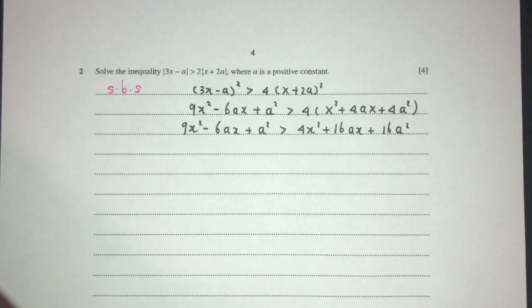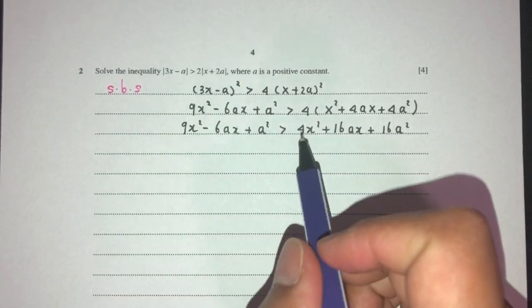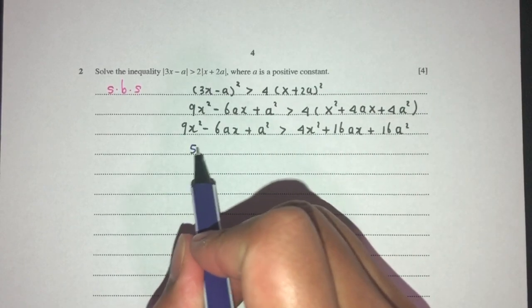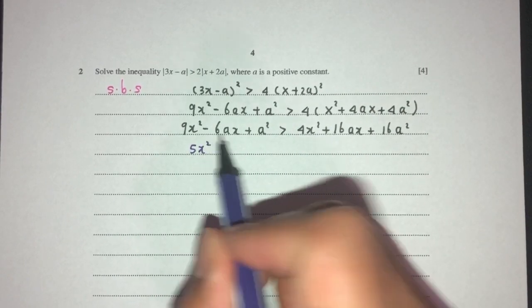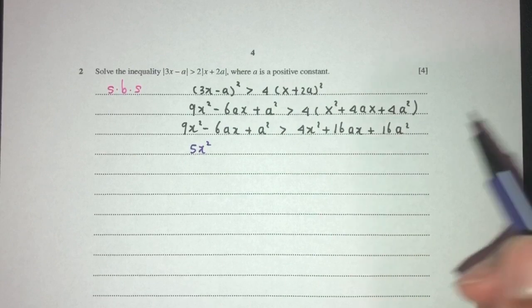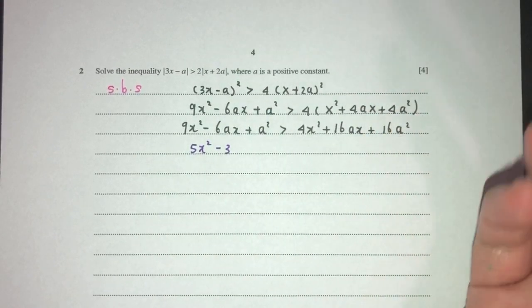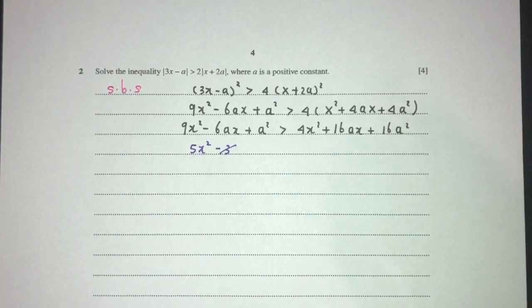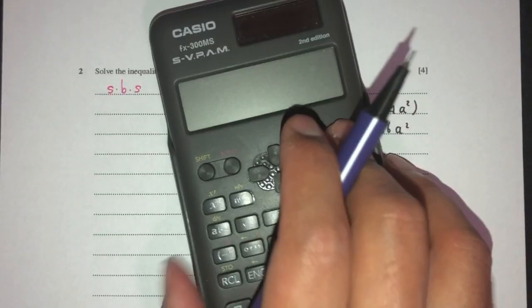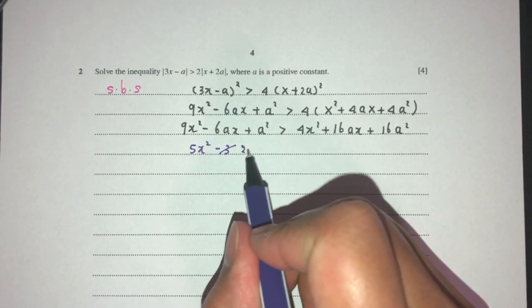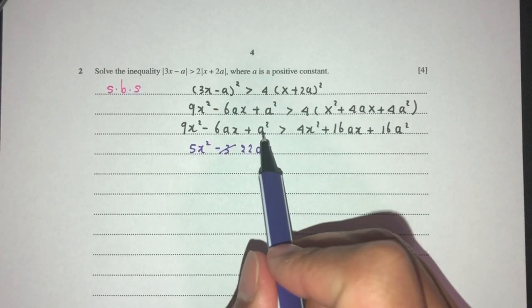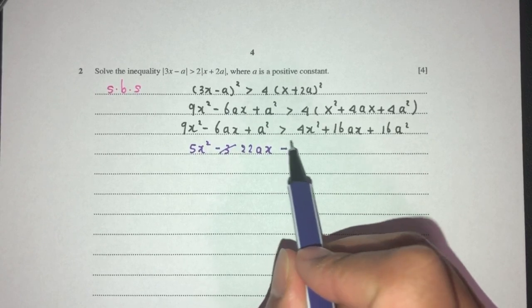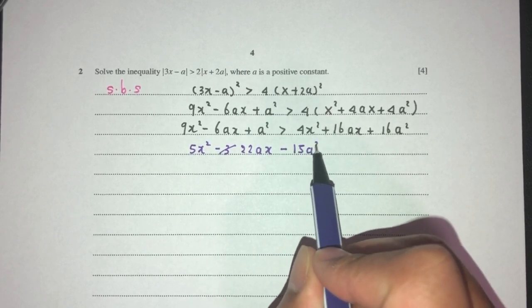That should be 9x^2 - 6ax + a^2 more than 4x^2 + 16ax + 16a^2. Now I'll send everything to one side. 9 minus 4 is 5. Minus 6 minus 16, that should be minus 32. Sorry, this is just a big mistake. Minus 6 minus 16 should be minus 22. There you go, minus 22ax. And here we have just the value of minus 15a^2, it's more than 0.